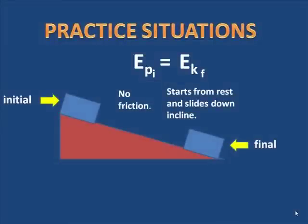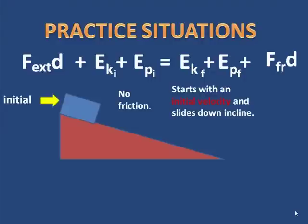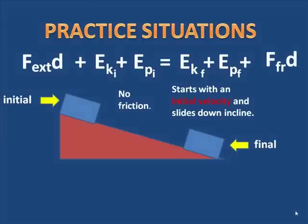Now let's take a look at the next example. I'll set it up, and then you'll try it on your own. We have an initial state where the block has no friction, but now it has an initial velocity, and then travels down the incline. Hit pause and find the equation that works for this situation.